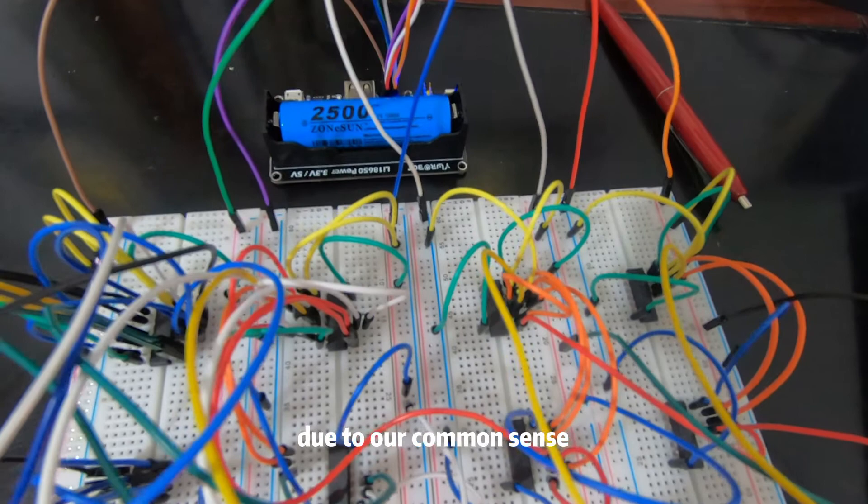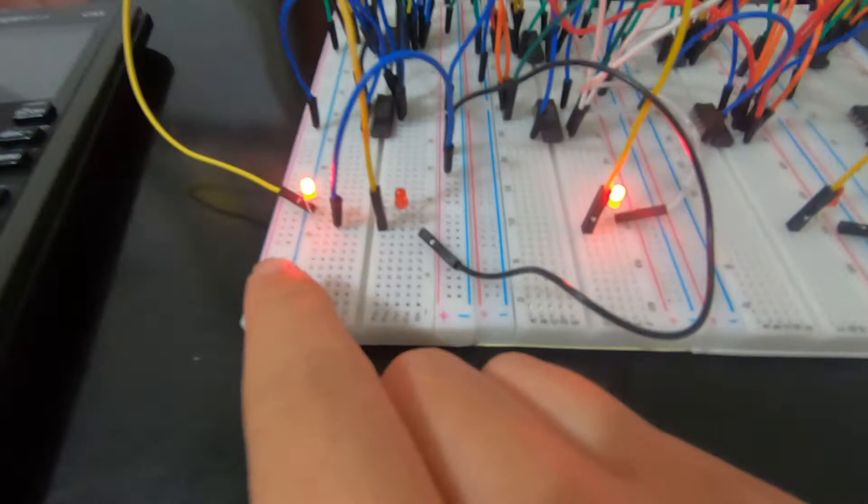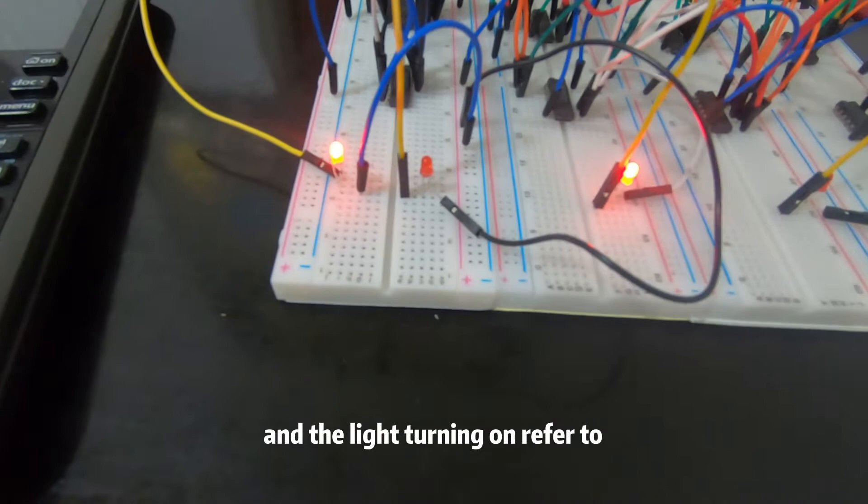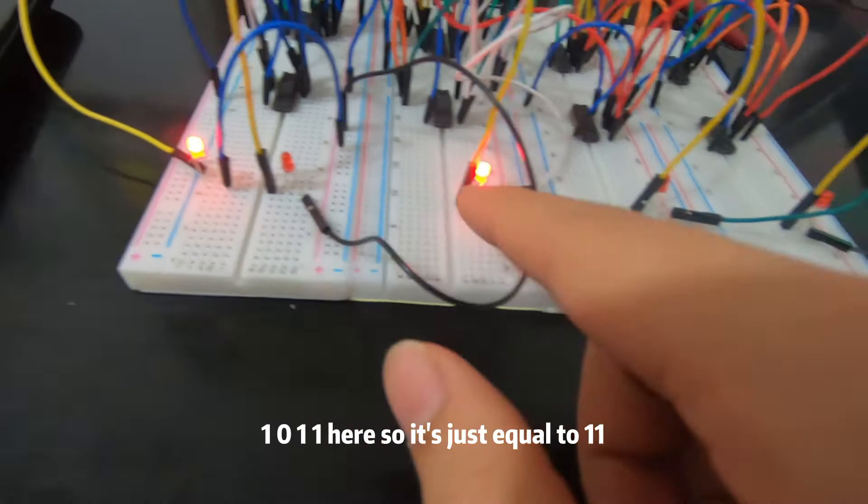Just look at what we got here. As I told you before, lights turning on represent zero and lights turning off represent one. So we got 1011 here, which equals eleven. Perfect!